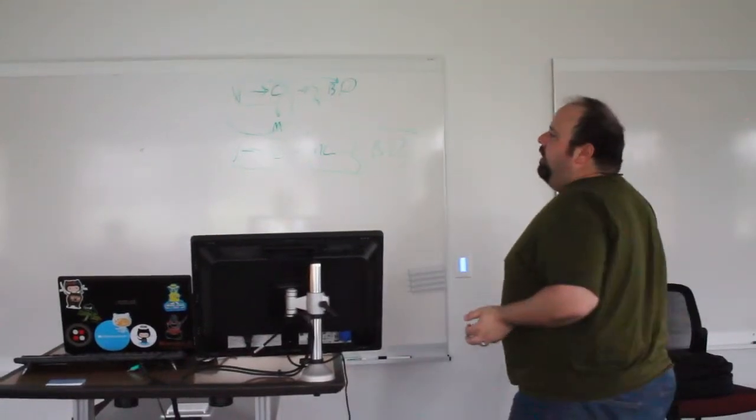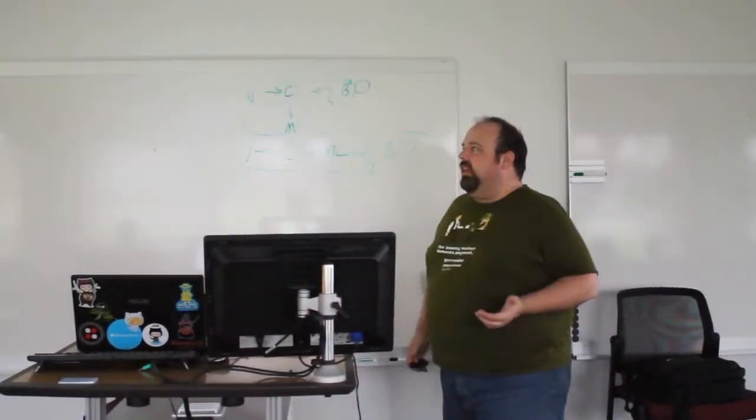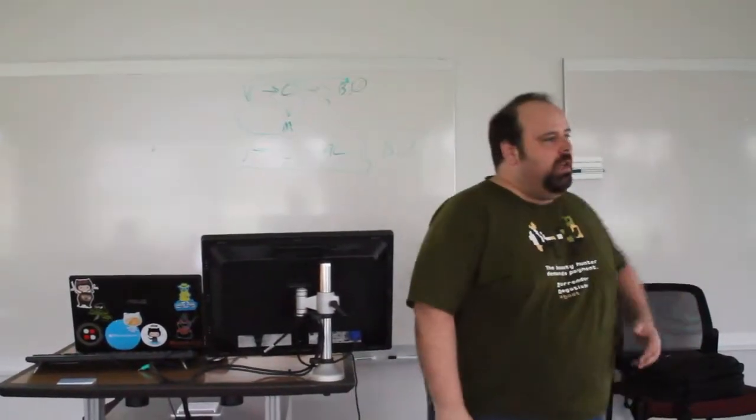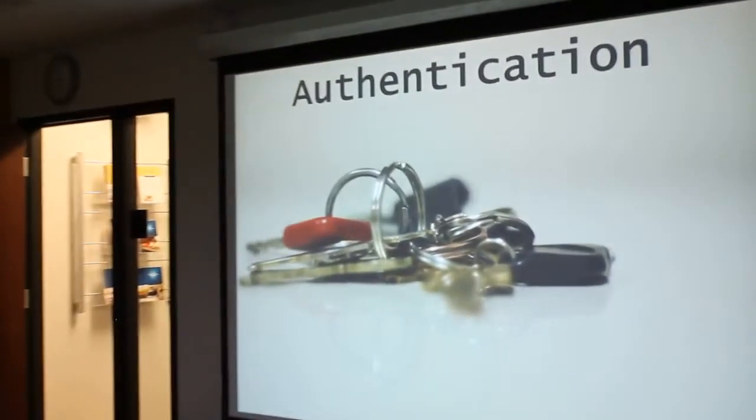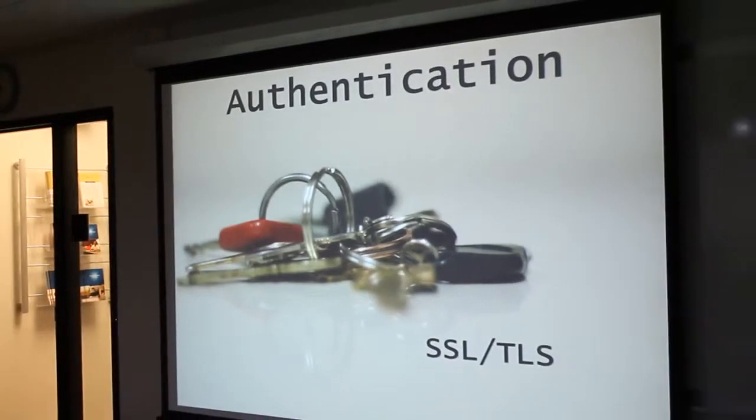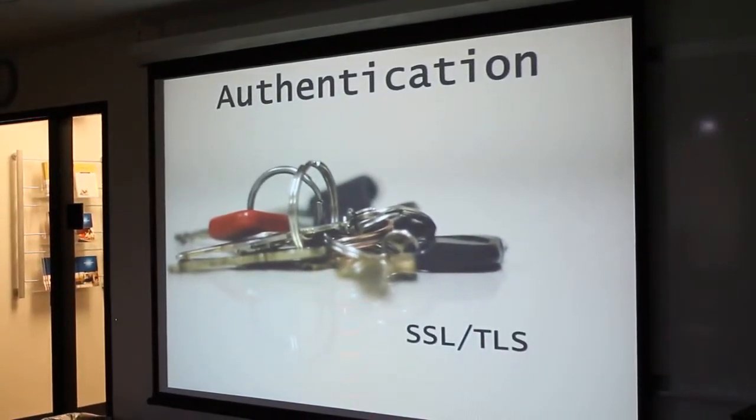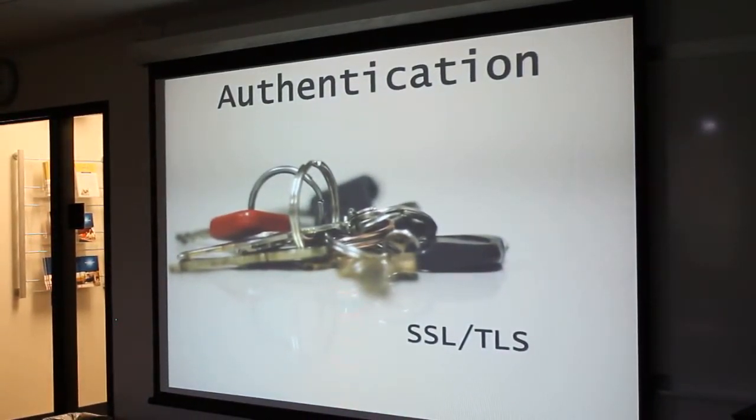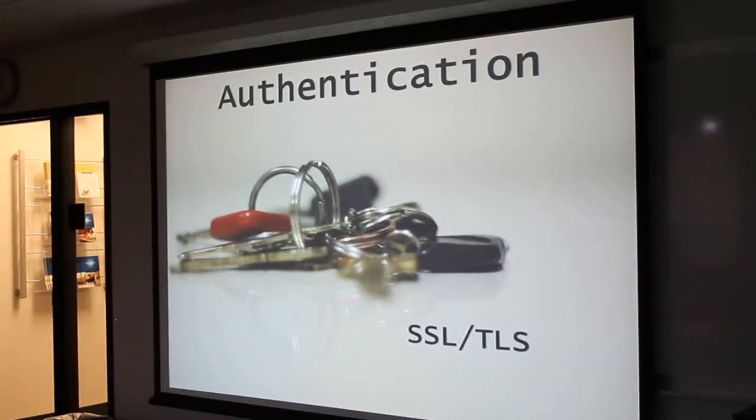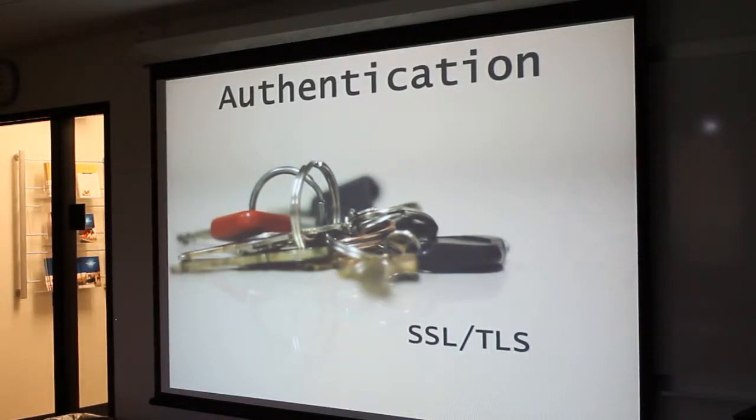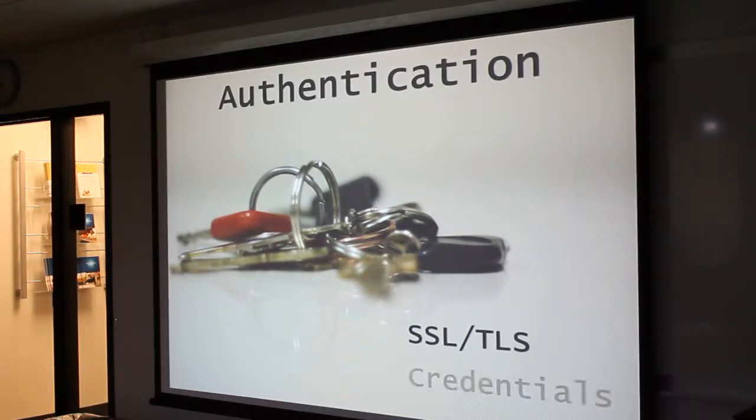I'm not going to get deep into security tonight because that could easily be another two hour long talk and there are people who are total security nerds who could probably do a much better job than I can. But basically to break it down, there's two facets of security. There's authentication and there's authorization. And the good news is whatever you're doing now for your web apps, you can do for the API. For authentication, it supports SSL or TLS if you're using TLS now. Same way your MVC or Webforms apps work now. It uses the same framework components.